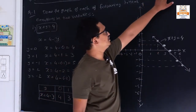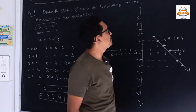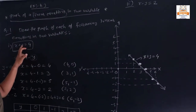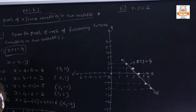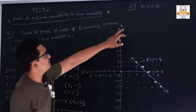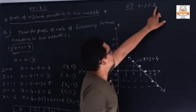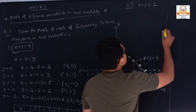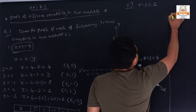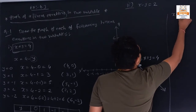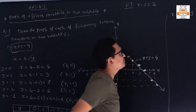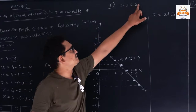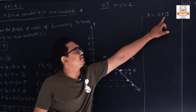For question 2, the equation is x minus y equals 2, which is similar to question 1. We can write x = 2 plus y, since y goes to the second side and becomes plus.